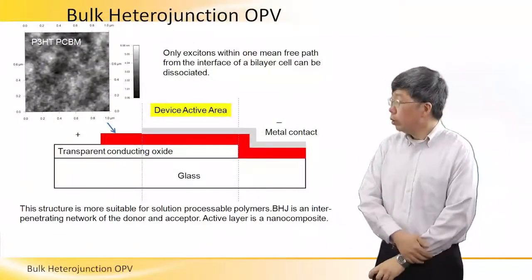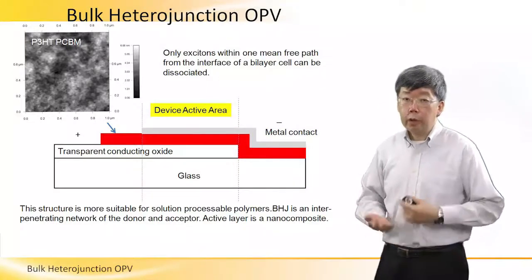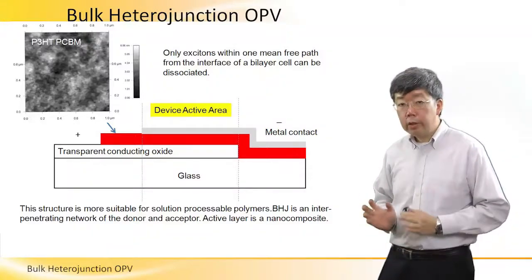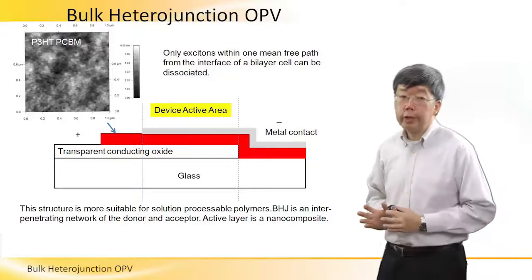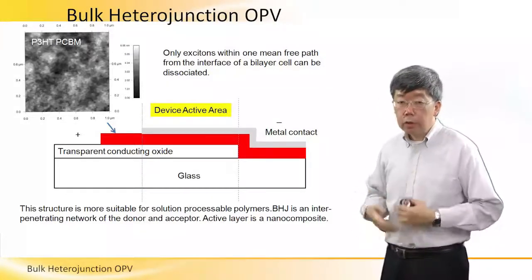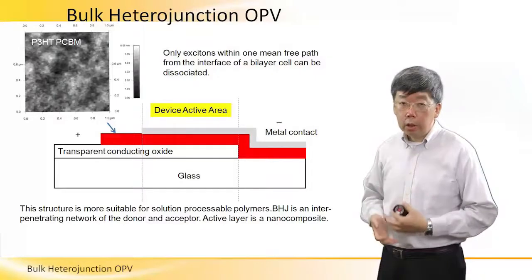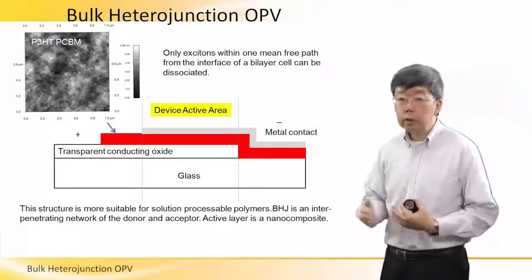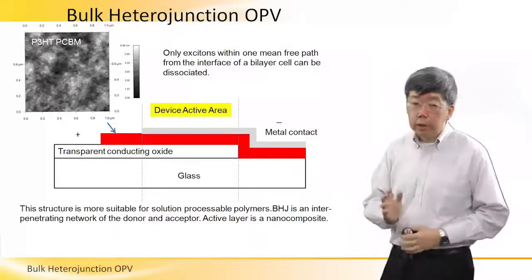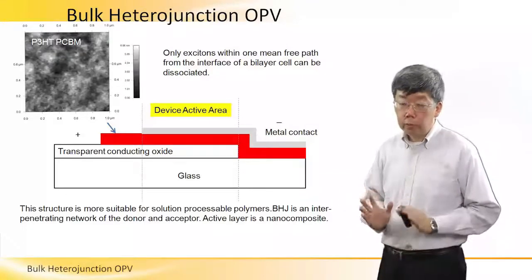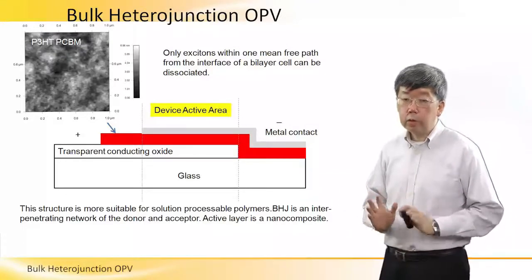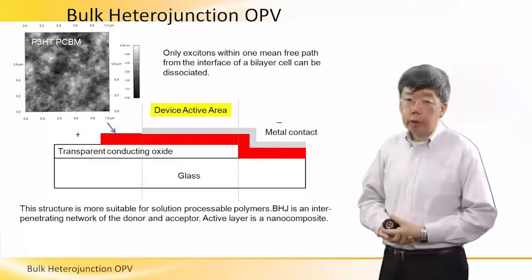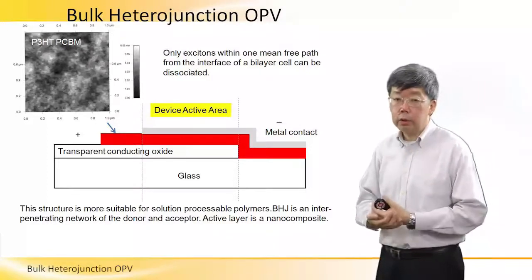Next we will talk about the bulk heterojunction OPV device structure. This device structure is more important because it is what is widely used in industry to fabricate photovoltaic devices for real applications. The bilayer structure is more suitable for research and development only. So we will explain more about the bulk heterojunction OPV.